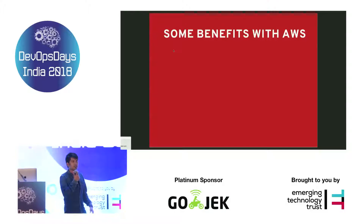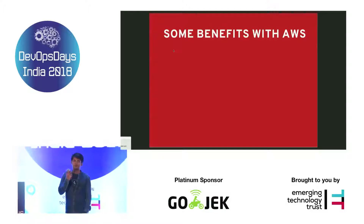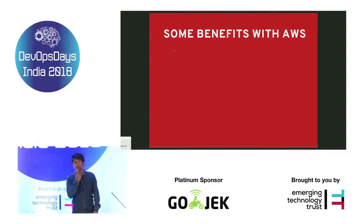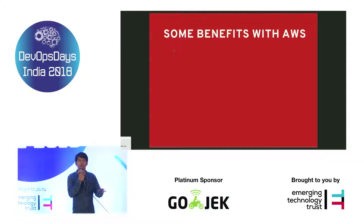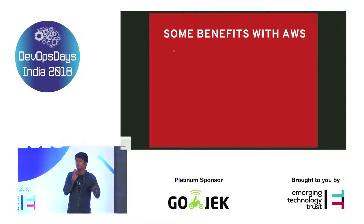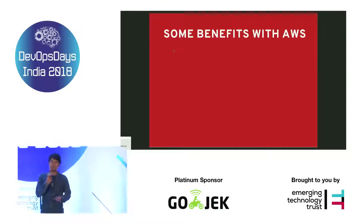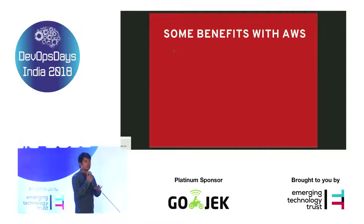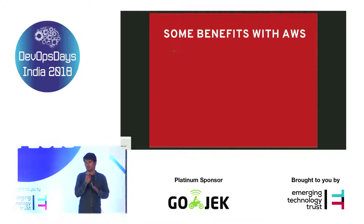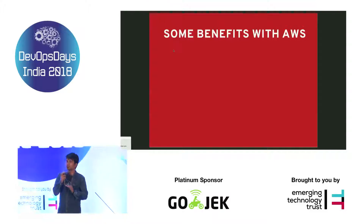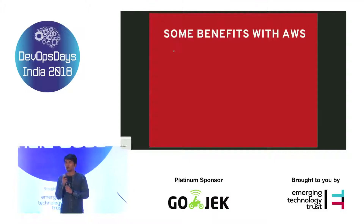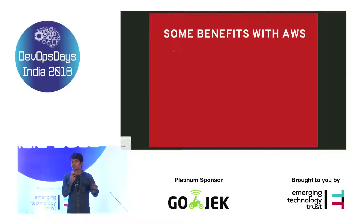Another benefit: consider your CIO tells you to migrate your whole database workload onto AWS. If you are using Ansible Tower, you don't have to do much — you just use the same playbook to automate the migration of the whole data to the Ansible infrastructure.